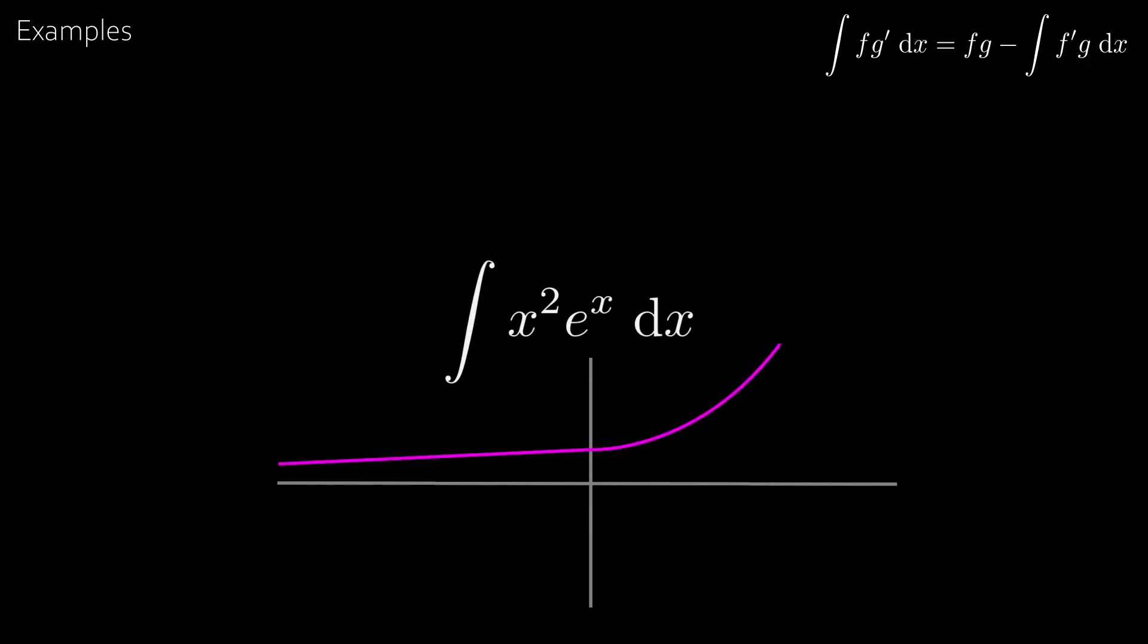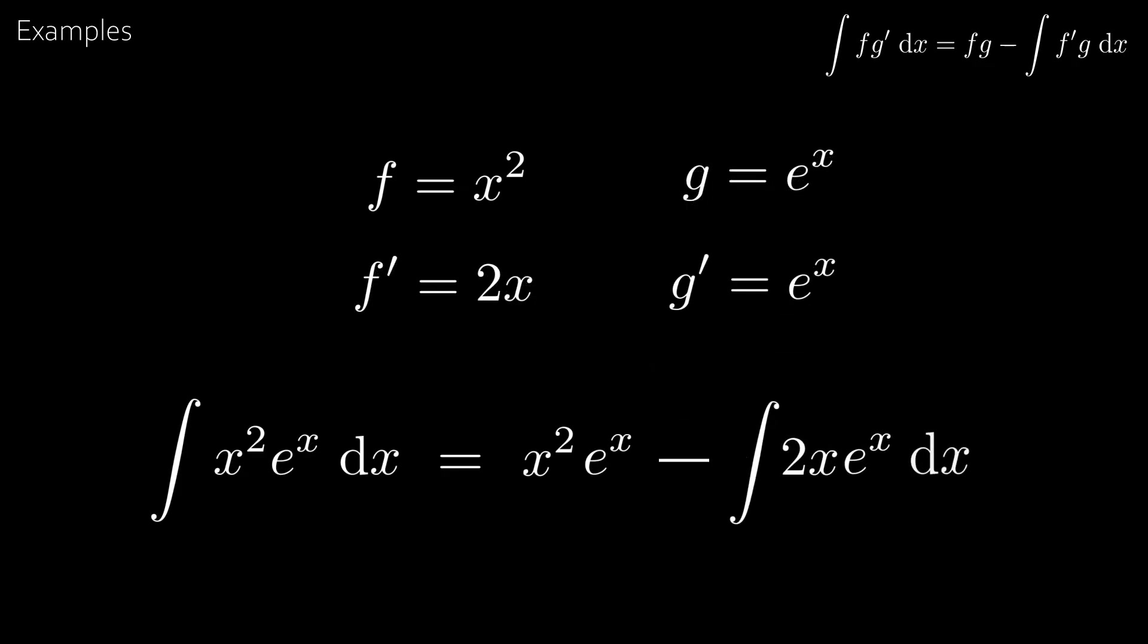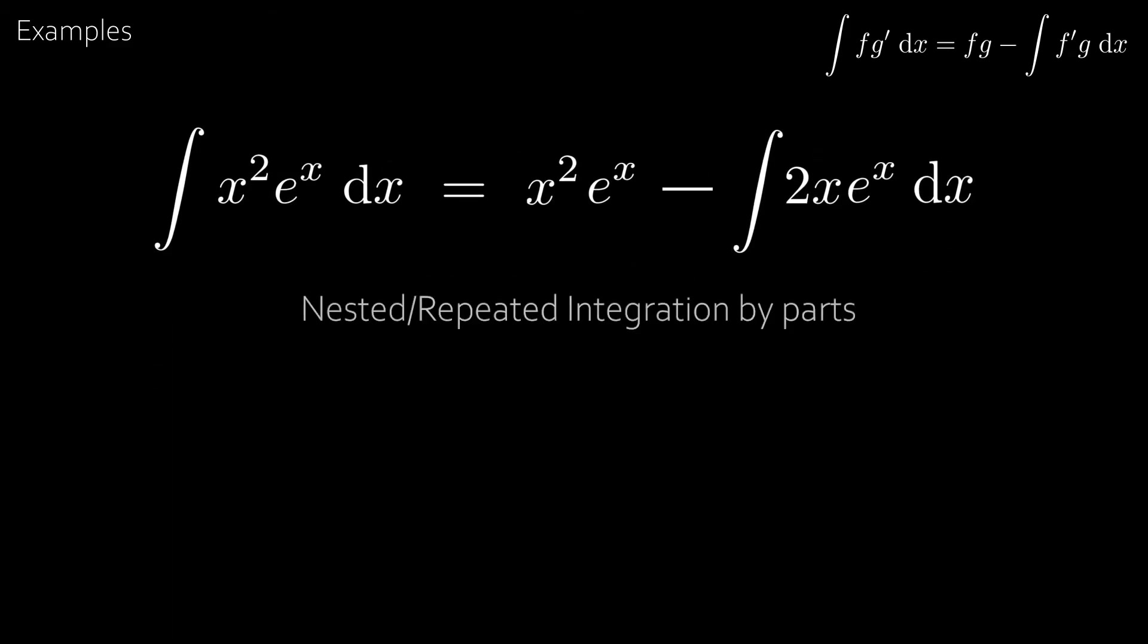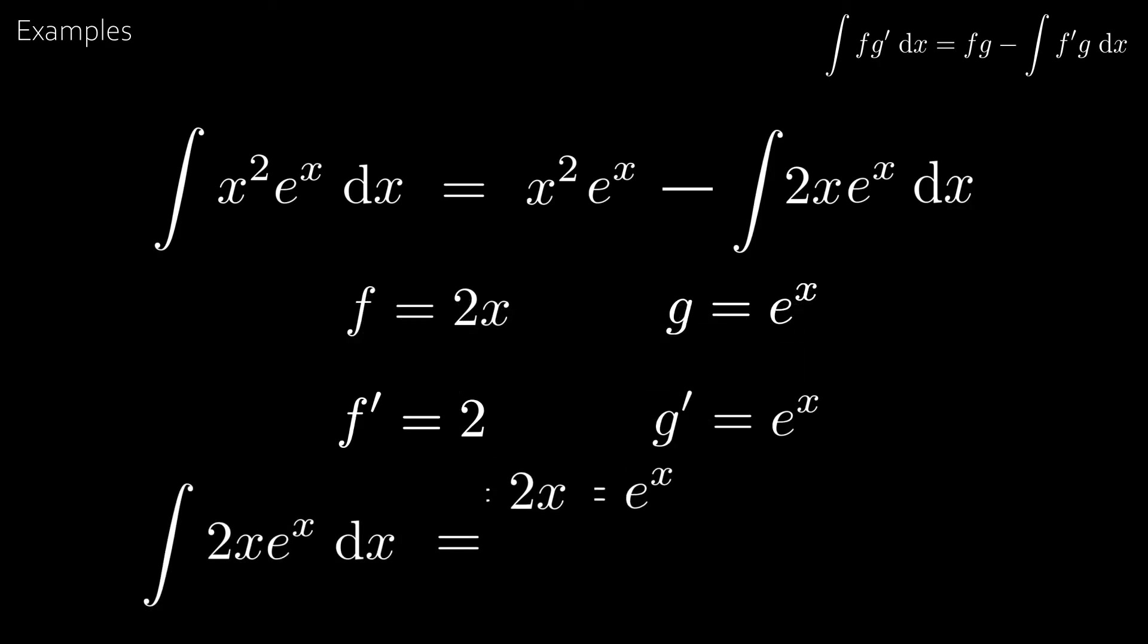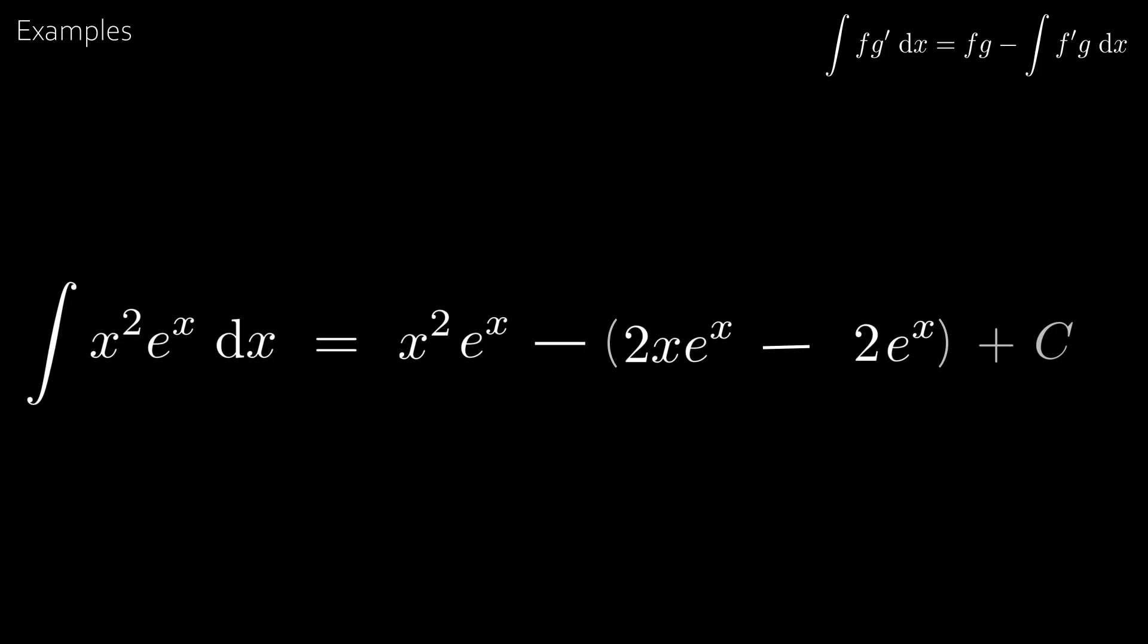Let's try the integral of x squared e to the x and take f equal to x squared and g dash equal to e to the x. Then f dash is equal to 2x and g is equal to e to the x. Then by the formula we get the integral of x squared e to the x is equal to x squared e to the x minus the integral of 2x e to the x. Now we see the integral on the right is also a product of two functions. So we can use integration by parts again a sort of nested integration if you will. So take f equal to 2x and g dash equal to e to the x. This gives that the derivative of f is 2 and the integral of g dash is e to the x. Which means that the integral of 2x e to the x is equal to 2x e to the x minus the integral of 2 e to the x and the integral of 2 e to the x is just 2 e to the x. And combining everything together and adding a constant on the end gives us our answer.